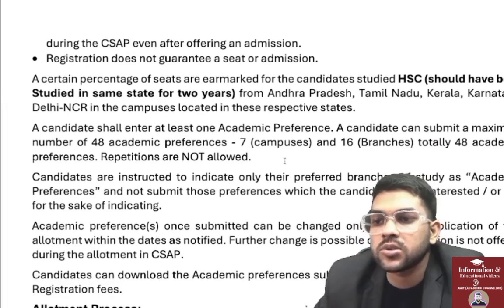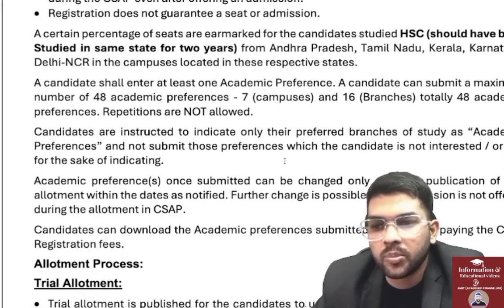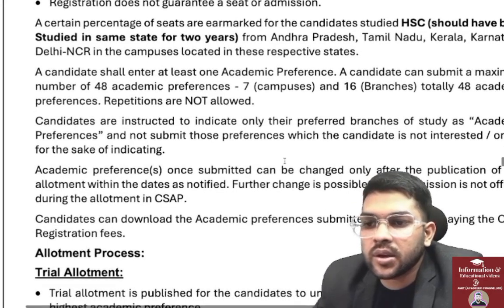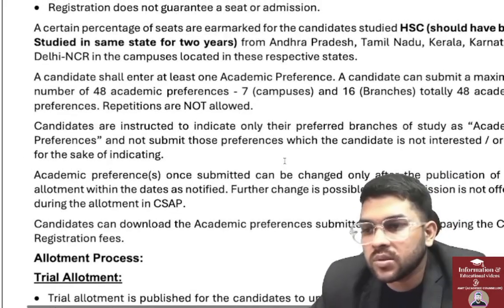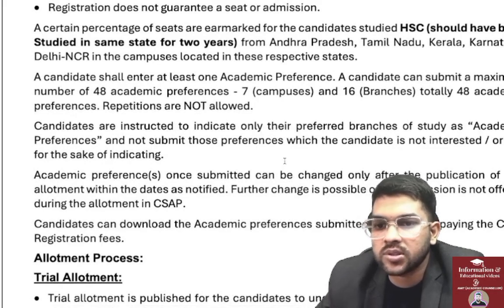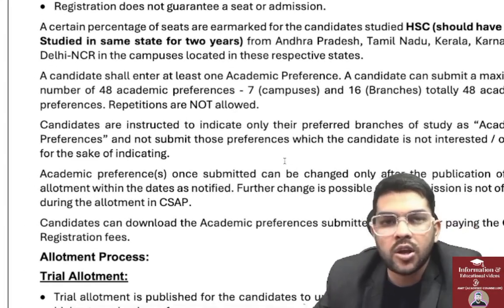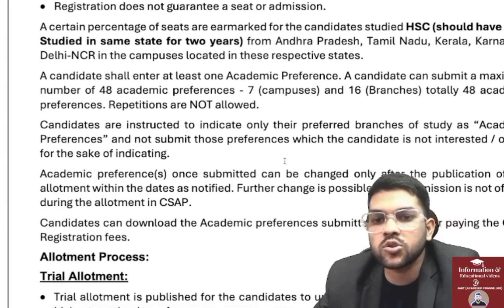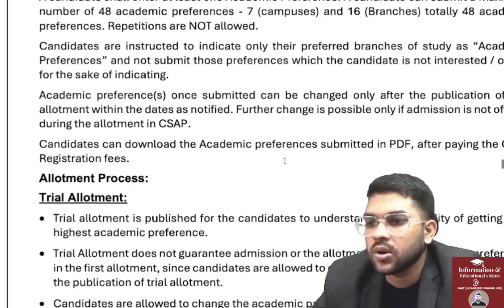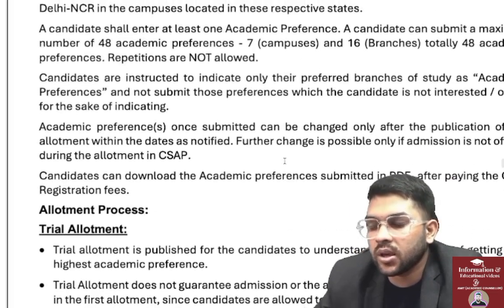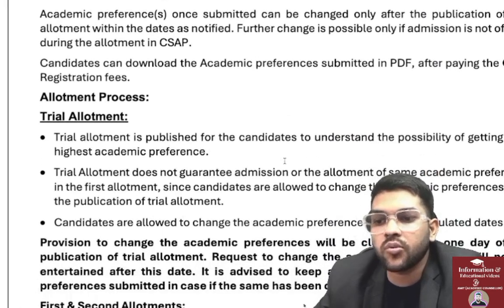The fee is refundable only if you submit preferences but do not receive any allotment even in the last round of CSAP. Registration is also non-refundable if you pay but don't apply any preferences. All refunds are processed only after the final allotment. Registration does not guarantee a seat — it depends entirely on your rank and preferences. A candidate can submit a minimum of 1 and a maximum of 48 academic preferences (7 campuses × 16 branches).